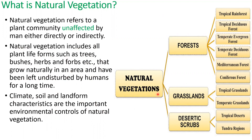Forests, grasslands, and desertic shrubs — forests are classified as tropical rainforests, tropical deciduous, temperate evergreen, temperate deciduous, Mediterranean forests, and coniferous forests. The grasslands are divided into tropical grasslands and temperate grasslands, and desertic shrubs include tropical deserts and tundra regions.